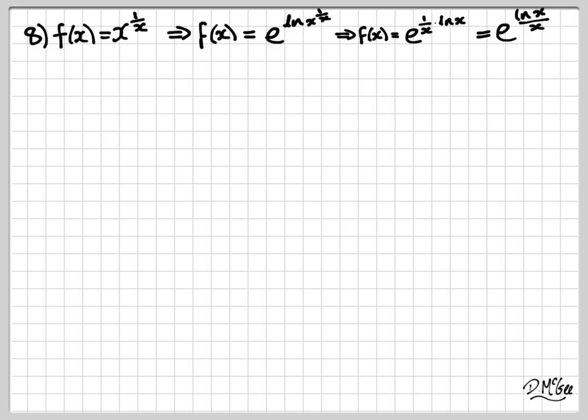In other words, it's equal to e to the power of ln x over x. Once it's in this form, it's fairly straightforward to differentiate by using a combination of the chain rule and the quotient rule.